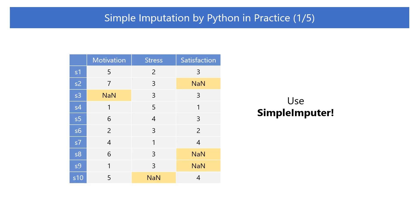The example above used a simplified case with only one variable. However, real datasets often contain multiple variables, and multiple variables may have missing data. This dataset is closer to real-world data, with missing values for one or more variables. In such cases, it is time-consuming to calculate the representative values for each variable and assign them one by one. However, if we use Python's SimpleImputer, we can implement simple imputation efficiently. Let's explore how to implement it.